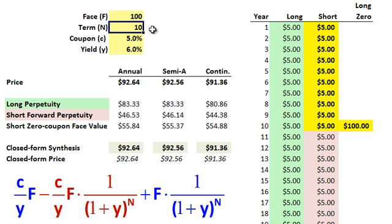Face value of 100, 10-year term or maturity. We'll assume the coupon pays annually 5% and that the yield or yield to maturity is 6%. As you probably know,